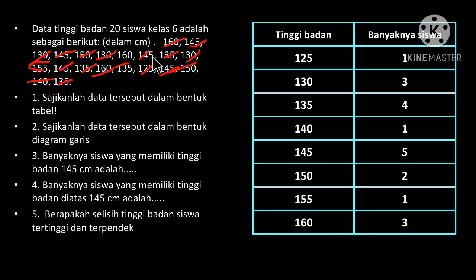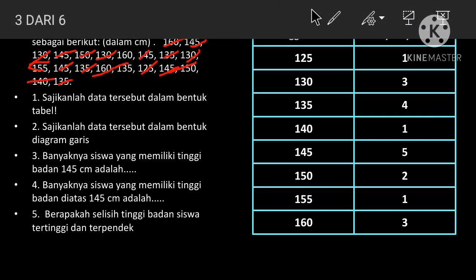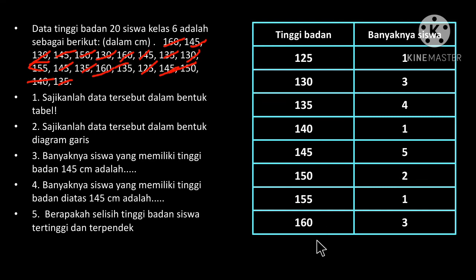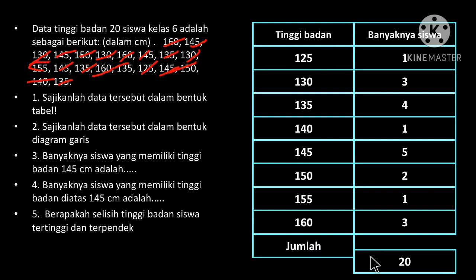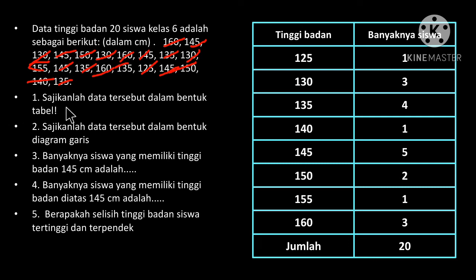Oh, ada tiga — ini satu lagi ketinggalan ternyata. Maka kalau kita jumlahkan semuanya adalah 20 siswa. Ini merupakan jawaban nomor satu, sajikan data tersebut dalam bentuk tabel.